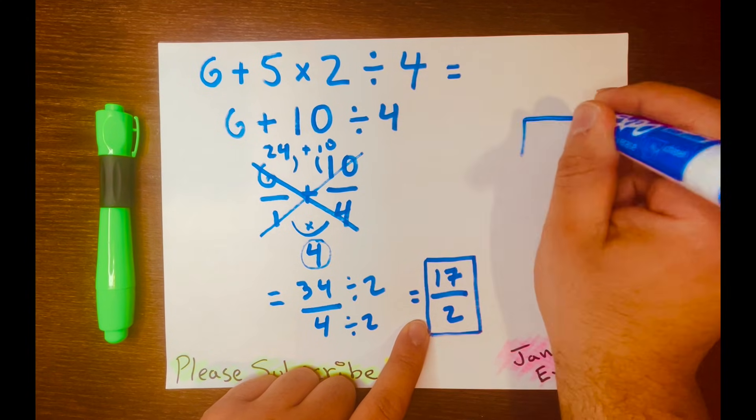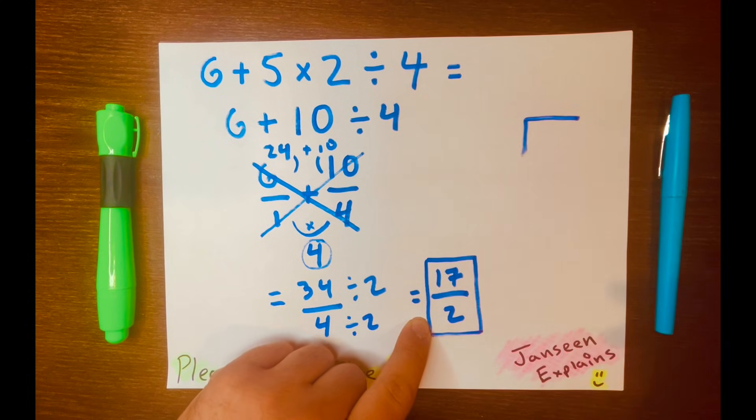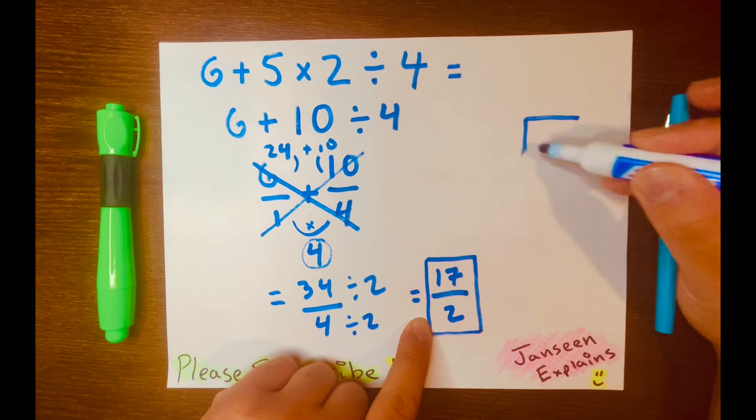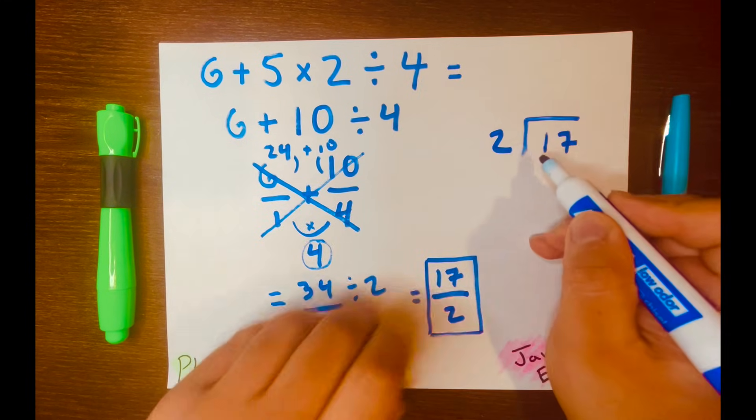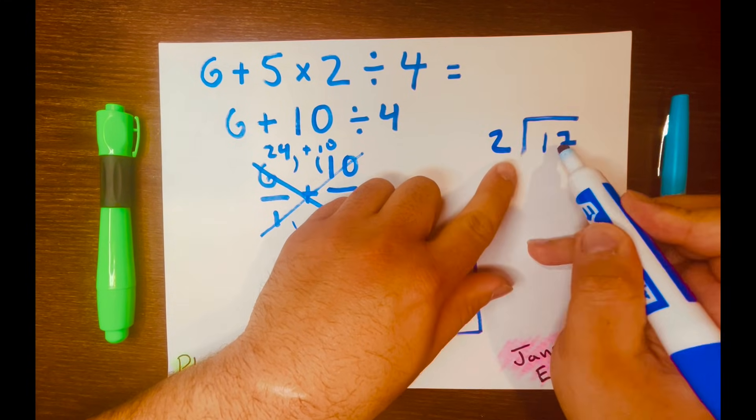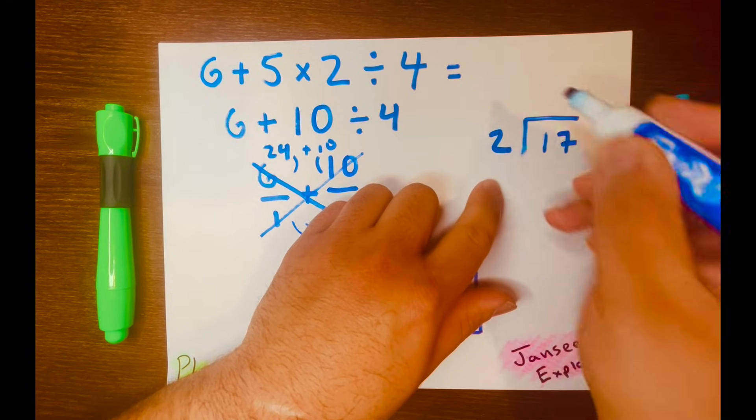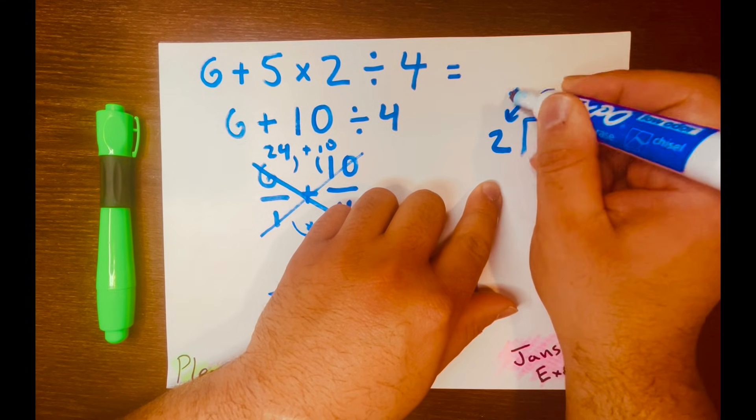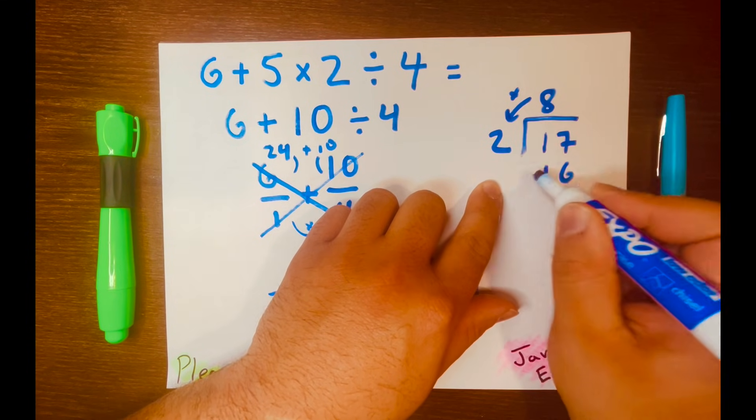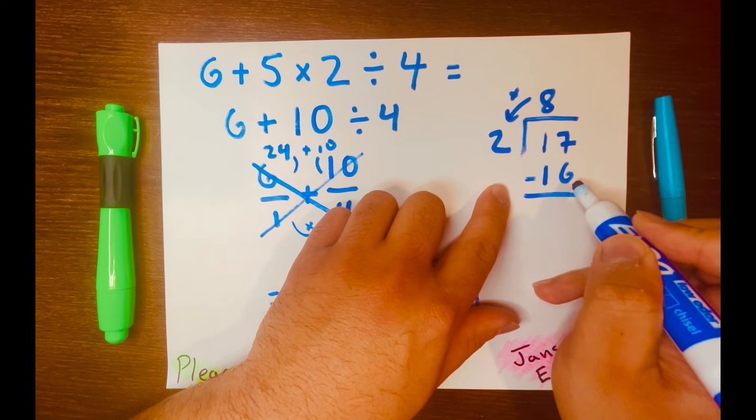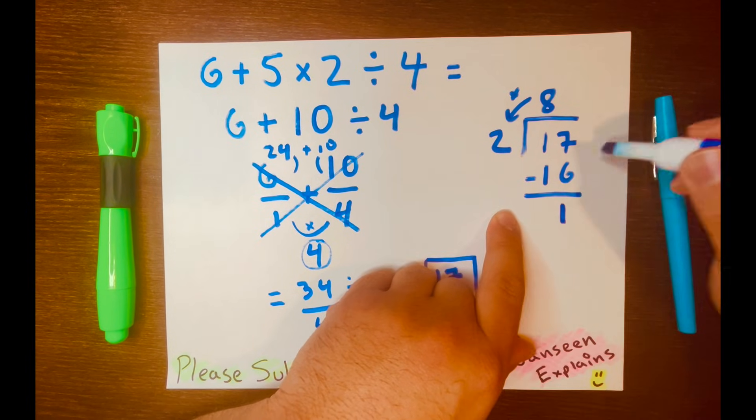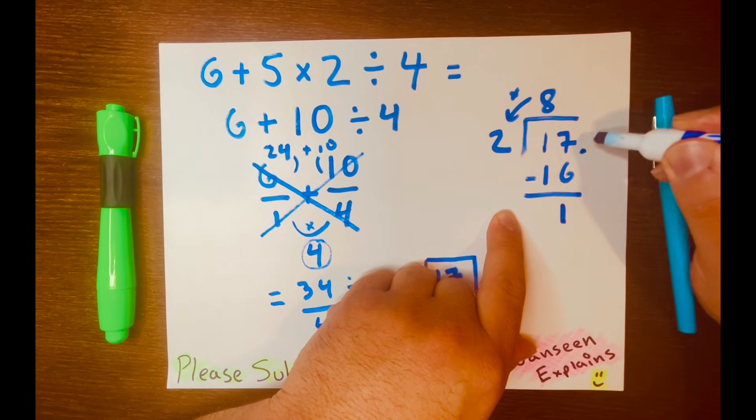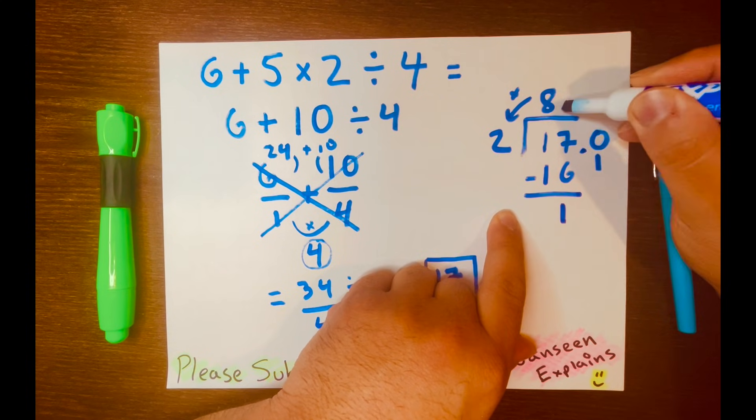So 17 will be the dividend and 2 will be the divisor. How many times can 2 fit into 17? 8 times. And then 8 times 2 is 16, so 17 minus 16 equals 1. How many times can 2 fit into 1? You cannot, so we need to borrow 0. So I'll add a decimal after the 17 and then add a decimal after the 8.